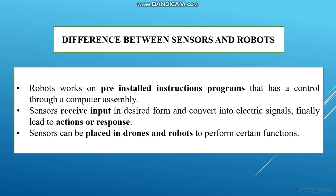The difference between sensors and robots is that robots work on pre-installed instruction programs — that is, they are controlled through a computer assembly. Sensors, on the other hand, receive input in a desired form and convert it into electrical signals, which finally lead to actions or responses.